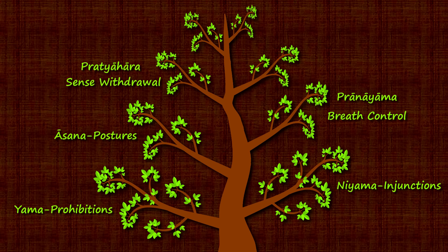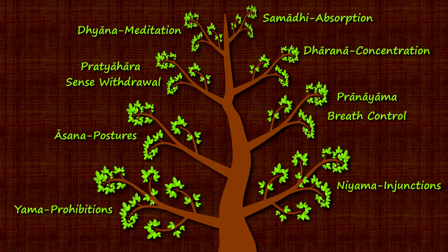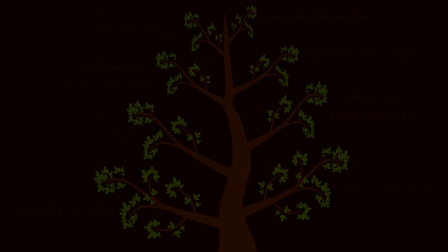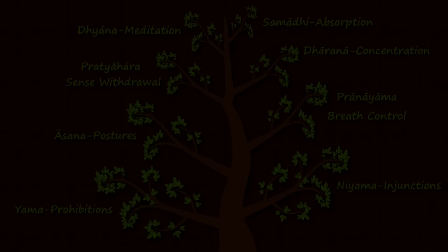The last three angas — dharana (concentration), dhyana (meditation), and samadhi (absorption) — mandate specific practices to control your mind. So these eight angas help you cultivate the skills required for meditation, by teaching you how to control your body, breath, senses, and your mind.